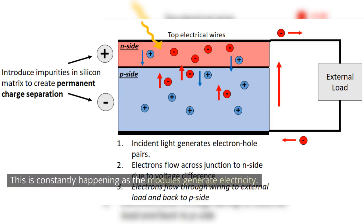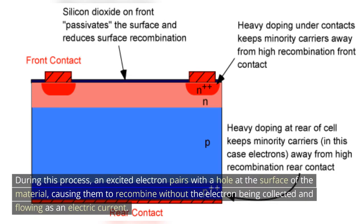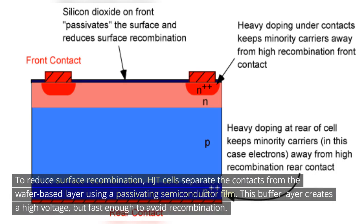This is constantly happening as the modules generate electricity. A phenomenon called surface recombination occurs in standard c-Si PV modules, which limits their efficiency. During this process, an excited electron pairs with a hole at the surface of the material, causing them to recombine without the electron being collected and flowing as an electric current. To reduce surface recombination, HJT cells separate the contacts from the wafer-based layer using a passivating semiconductor film. This buffer layer creates a high voltage, but fast enough to avoid recombination.